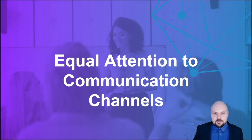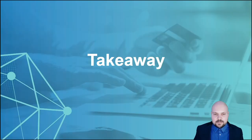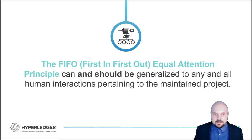The other thing you want to make sure is to provide equal attention to communication channels, meaning that people's queries about the project should be answered in order of submission, the same way pull requests are reviewed. So the takeaway here is that this first-in-first-out equal attention principle can and should be generalized to any and all human interactions pertaining to the maintained project.